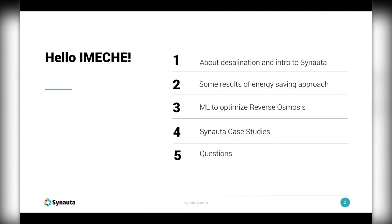To summarize what I'll cover today: I'll explain a little about desalination and give an introduction to Sonora — in the UK there aren't many desalination plants, so let's cover some background on how desal works. Then I'll share results of an energy-saving approach using AI, and discuss in more depth machine learning to optimize reverse osmosis — the key process used in desalination — followed by case studies and real results from around the world, finishing with questions.